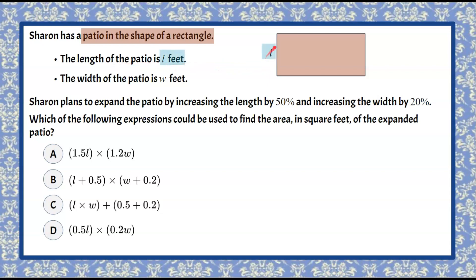We're told that the length of the patio is represented by L feet. So here's our length L. The width of the patio is W feet, so we're going to label that W.